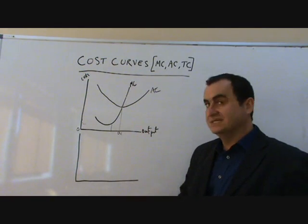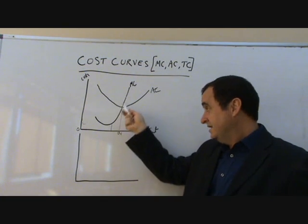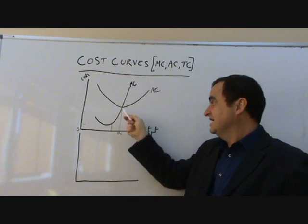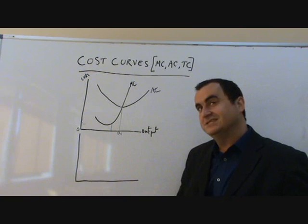So this relationship between MC and AC is critical. You must always remember that this takes place. The MC cuts the AC at the minimum point of the AC. Now, what about total cost?